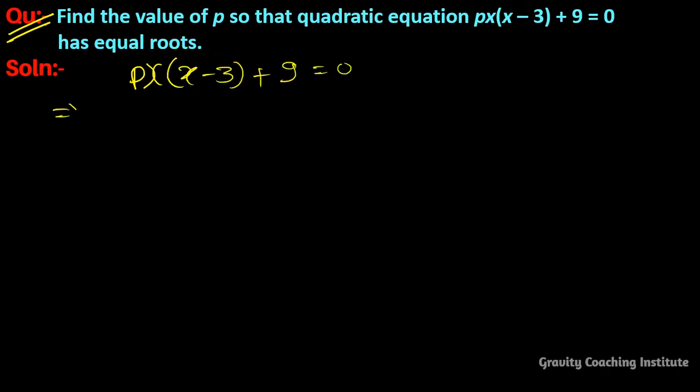First of all, we have px² - 3px + 9 = 0. Now we have this equation as a standard quadratic equation compared to ax² + bx + c = 0.